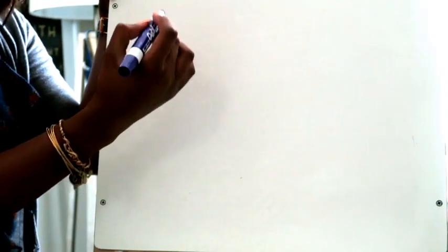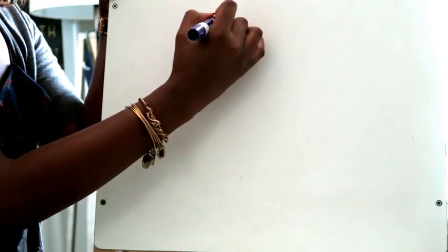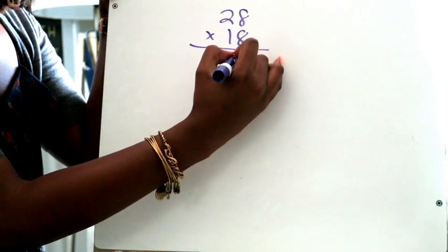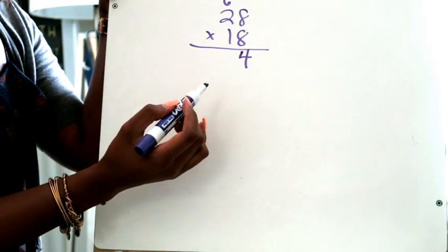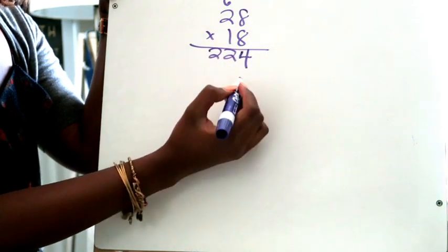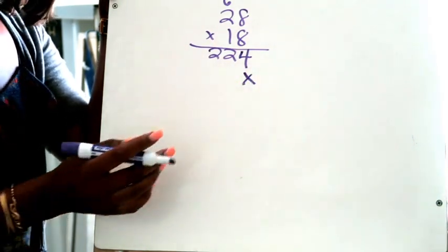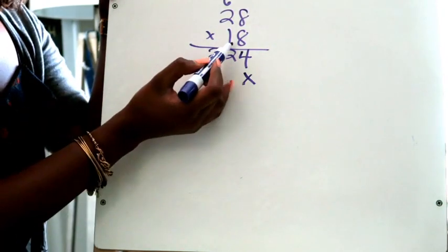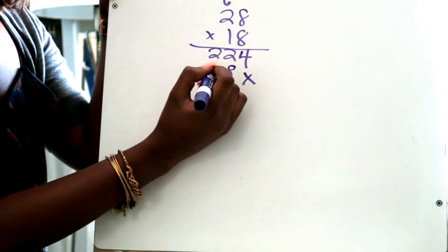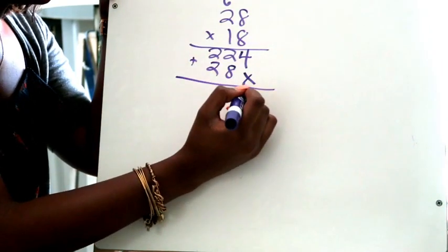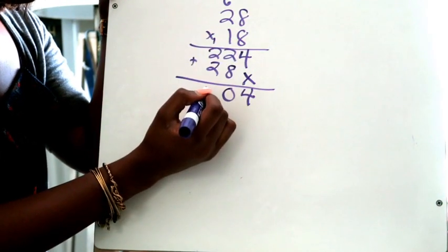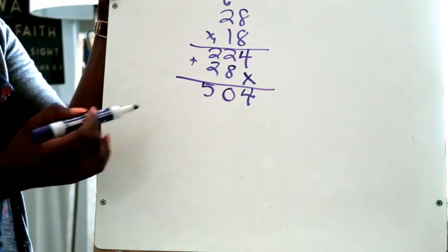Let's solve it traditionally, the regular way, so that I can prove to you partial products does work. So you have 28 times 18. 8 times 8 is 64, 8 times 2 is 16, plus 6 is 22. You have to remember to put that placeholder there so you don't make the mistake like most students have done in the past. You're going to do 1 times 8 is 8, 1 times 2 is 2. You're going to add these: you get 4, 8 plus 2 is 10, 2 plus 2 is 4 plus 1 is 5, and you get 504, which was the same answer that we got with our partial products.